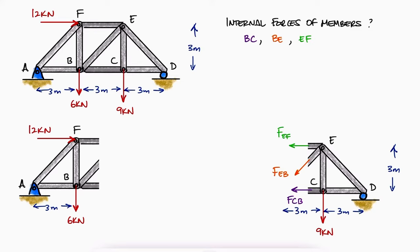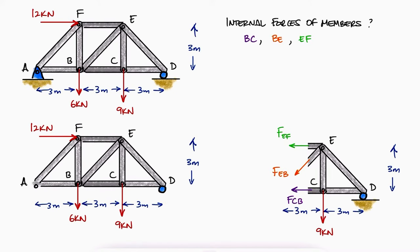As opposed to the previous example, and regardless of which section we'll use to find those three forces, we'll need to find the reaction forces at either A or D. For this reason, the first step is to draw a free body diagram of the entire structure, like we explained during the main lecture video, to find the value of the reactions we'll use to find the internal loads.